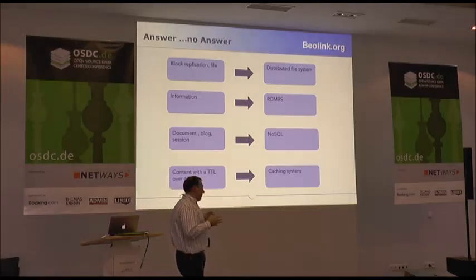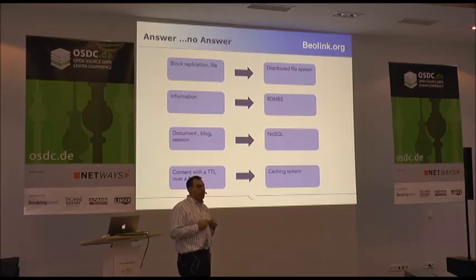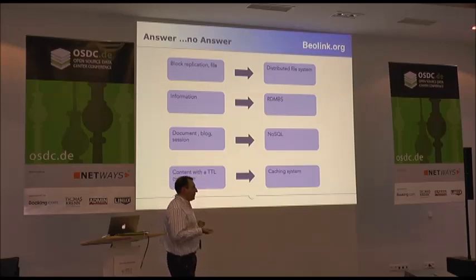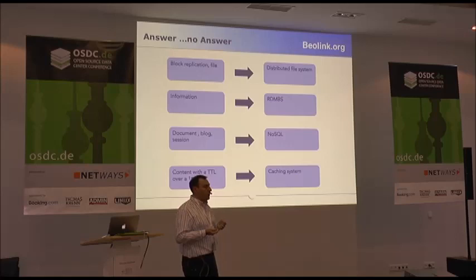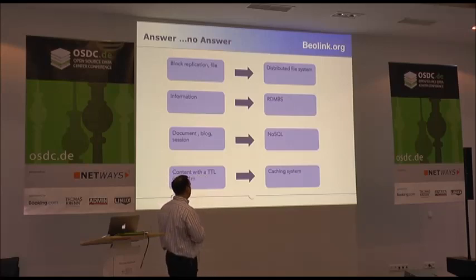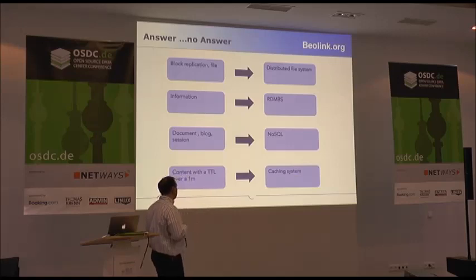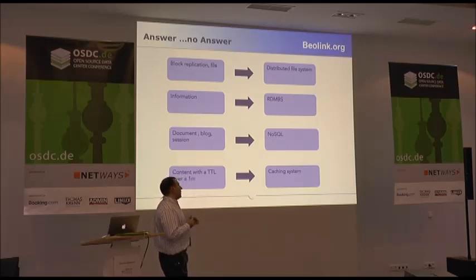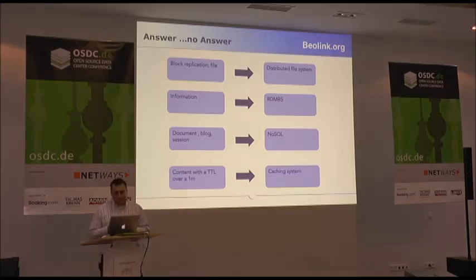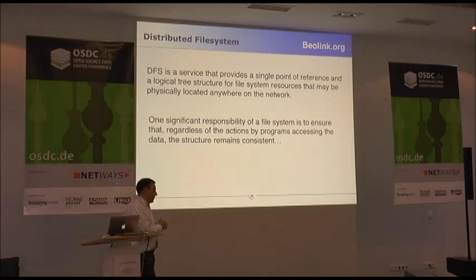We can also divide content by type. An important point: there is no perfect replication system. The replication system is made based on the content you have. If you have to replicate blocks or files, probably the best solution is a distributed file system, because you probably don't want to lose data or have users see different data or have inconsistent state. If you have well-structured information, you probably want a database. For most other things — documents, sections, properties, or content that doesn't change very often — you probably want to move to NoSQL.